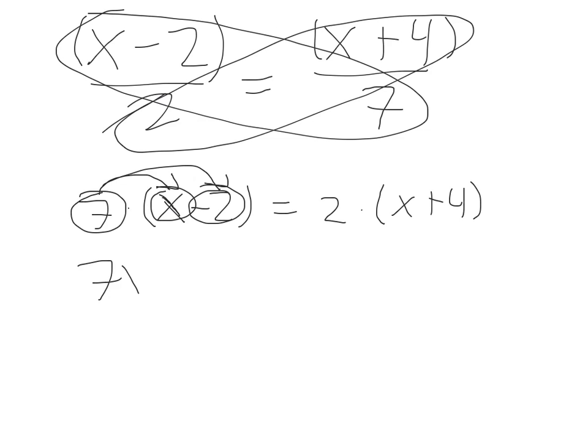So 7x minus 14 equals, and it's the same thing over here, 2 times x and then 2 times 4. So it would be 2x plus 8.